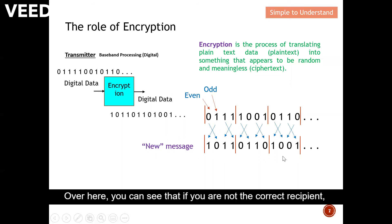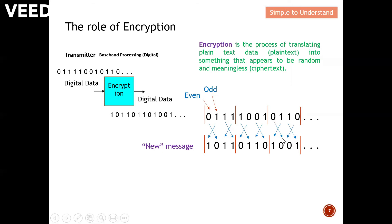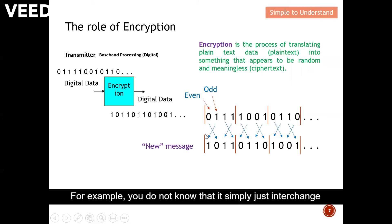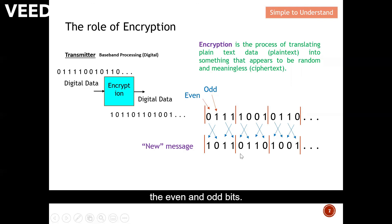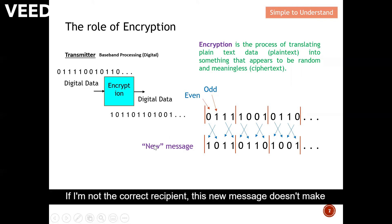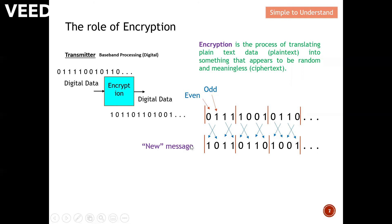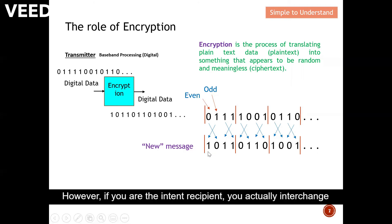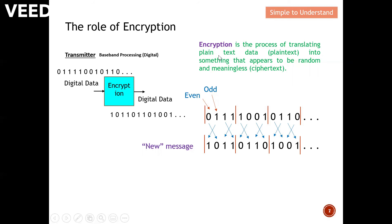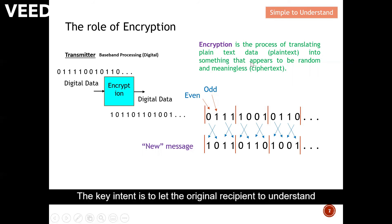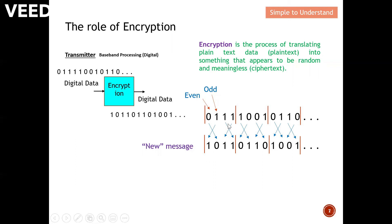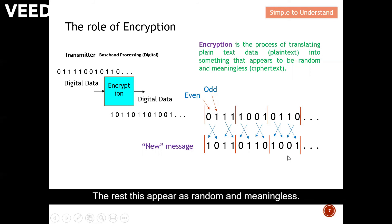Over here, you can see that if you are not the correct recipient, this message does not make sense to you. For example, you do not know that it simply just interchanges the even and odd bit. If you are not the correct recipient, this new message doesn't make sense to you. However, if you are the intended recipient, you actually interchange the partition of the even and odd bit, you actually recover back the original message easily. So this is the intention of encryption. The key intent is to let the original recipient understand the message. The rest appears as random and meaningless.